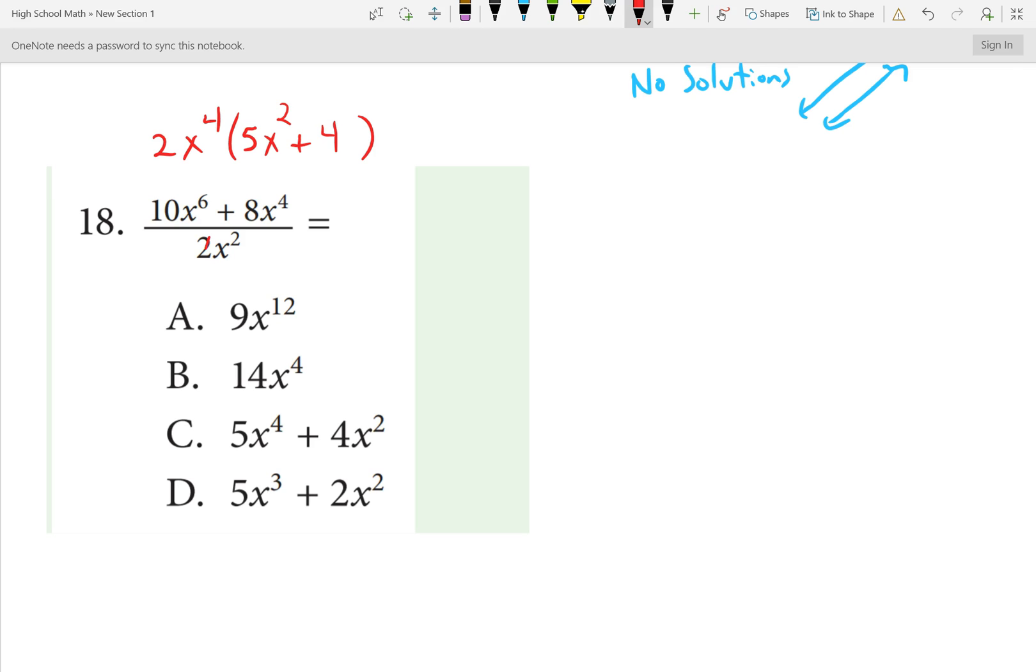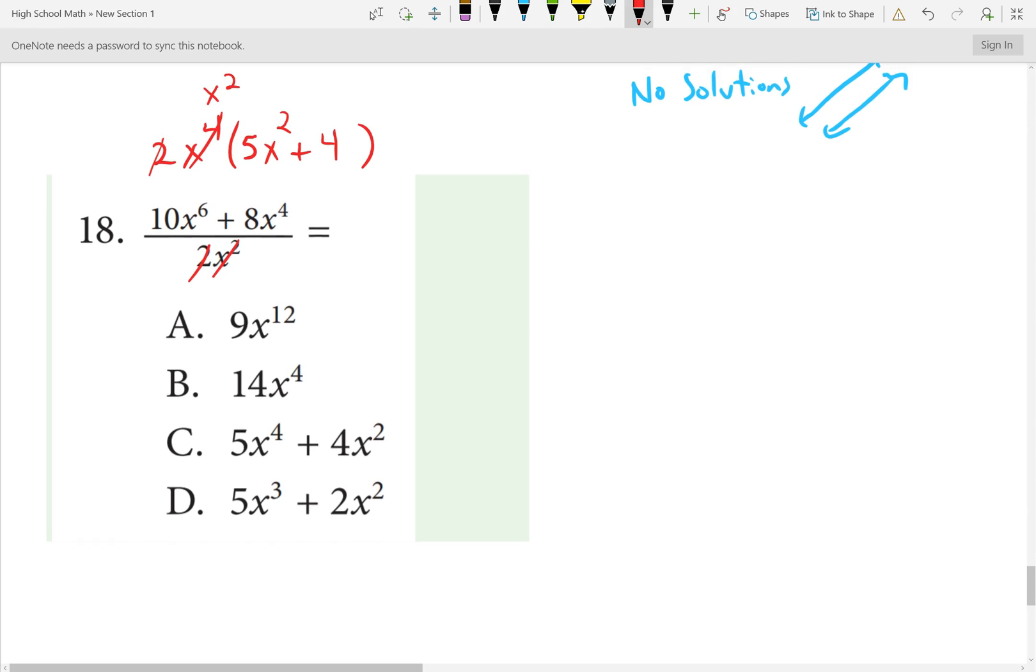Now we can do some canceling. 2 will cancel with the 2. X squared will divide with X fourth to leave an X squared. Now we need to distribute to get to one of these looking terms. X squared times 5X squared will be 5X to the fourth. X squared times 4 will be a 4X squared. And that looks like C. Number 18 is C.